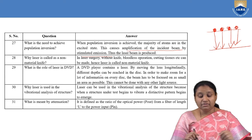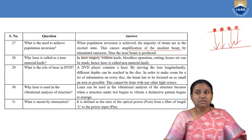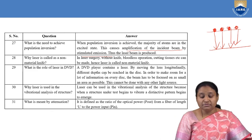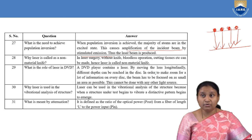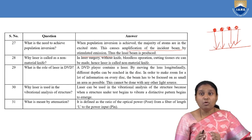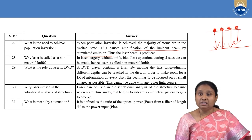Why is laser called a non-material knife? Because in laser surgery, tissues are cut without using a physical knife and without any loss of blood — it is called a bloodless operation. What is the role of laser in a DVD player? By moving the lens longitudinally, different depths can be reached on the disc. To store more information, the laser beam must be focused on as small an area as possible, which cannot be done with ordinary light, so a laser source is used.